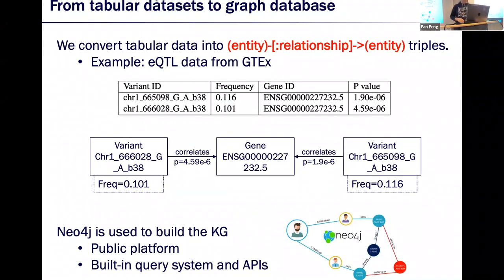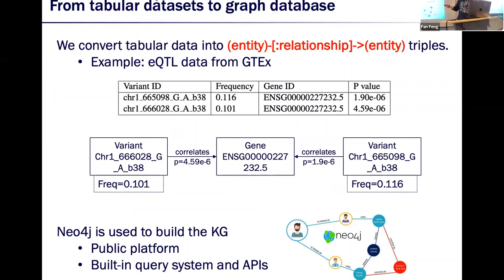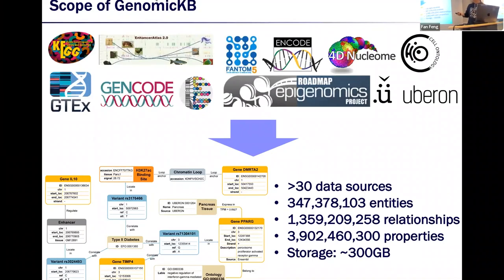All nodes and entities have different properties — for example, a gene has ID, location, strand, and description, and some relationships also have properties like median TPM. To build this knowledge graph, we only need to define a rule to convert tabular data into nodes and edges representing entities and relationships. For example, a table from GTEx showing two eQTLs of the same gene can be converted into a subgraph with three entities and two relationships. We use Neo4j as our platform — it efficiently implements knowledge graphs, has a built-in query module, and provides advanced APIs. In the end, we collected more than 30 data sources and built a knowledge graph with more than 300 million entities, more than 1.3 billion relationships, and almost 4 billion properties, with only about 300 gigabytes of storage.